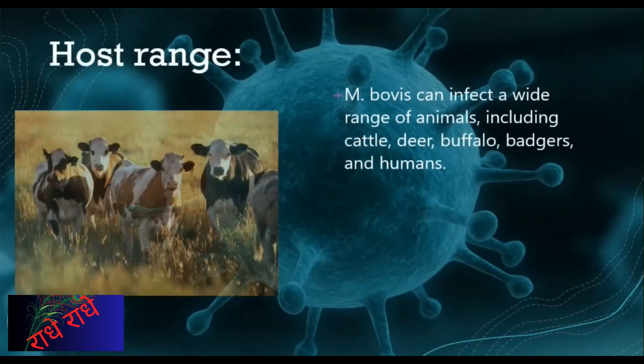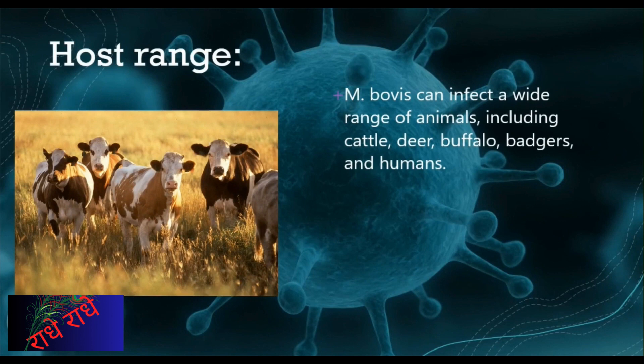M. bovis is a bacteria that is capable of infecting a wide variety of animals, such as cattle, deer, buffalo, badgers, and even humans. Its host range is amongst the broadest of all bacteria, which indicates its remarkable ability to adjust and persist in a variety of climates.